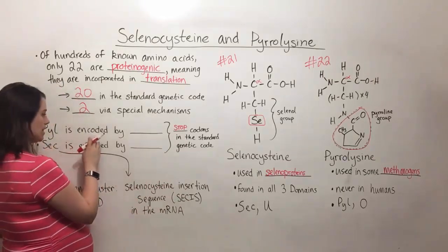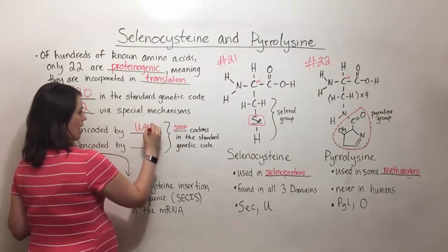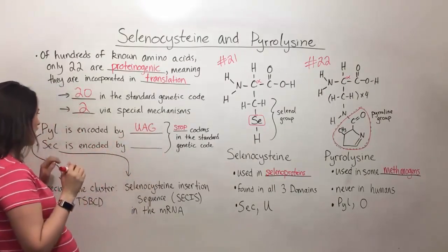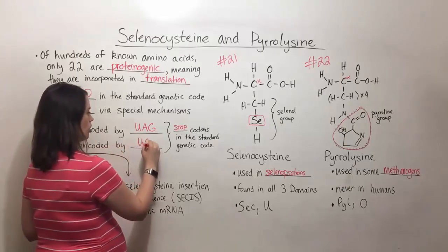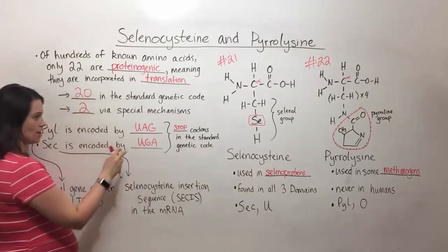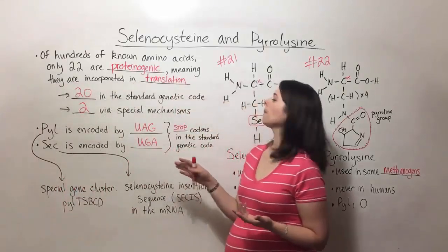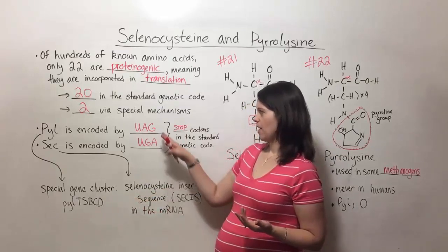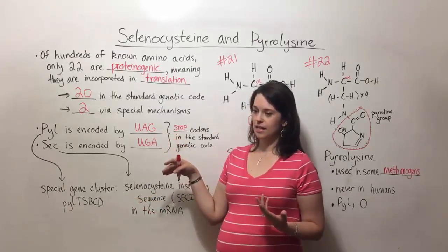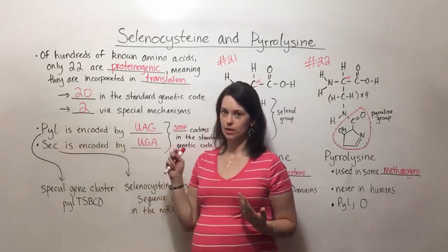And so pyrolysine is encoded by UAG and selenocysteine is encoded by UGA. And so those are the codons that are typically stop codons. But in certain cases, which we'll go over right here, they can instead direct the cell to incorporate a pyrolysine or a selenocysteine instead.